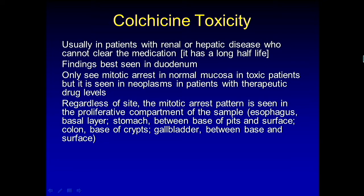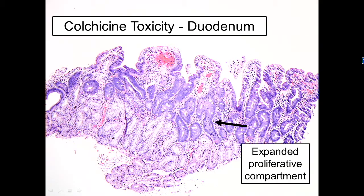In the esophagus, the mitotic arrest pattern is in the basal layer. In the stomach, it's in that pocket between the pits and the surface. In the colon, it's at the bottom. And in the gallbladder, it's a little higher up. So you have to know where your proliferative compartment is.